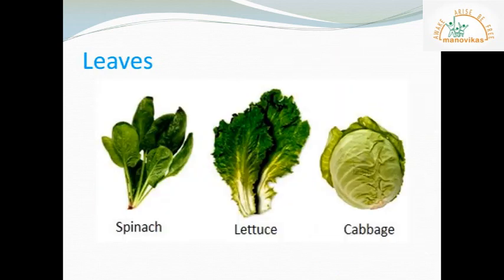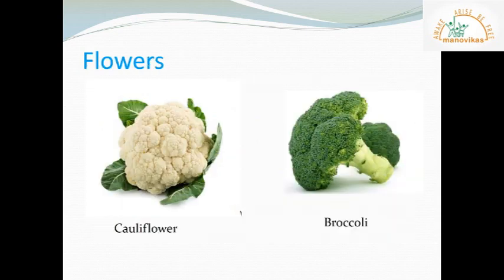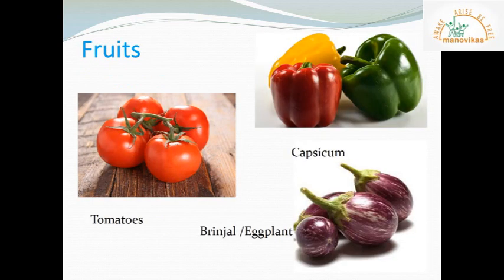Spinach, lettuce and cabbage are examples of leaves that we eat as green leafy vegetables. Cauliflower and broccoli are examples of flowers that we eat as vegetables. Tomatoes, capsicum and brinjal are examples of fruits that are eaten as vegetables.